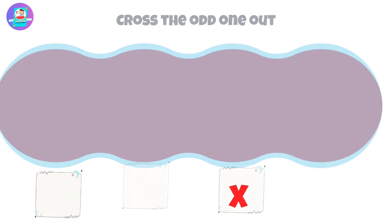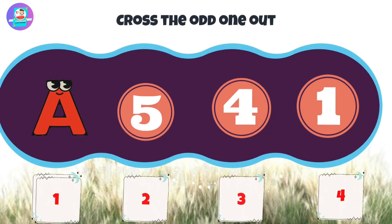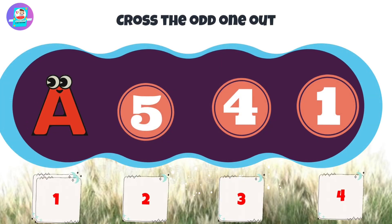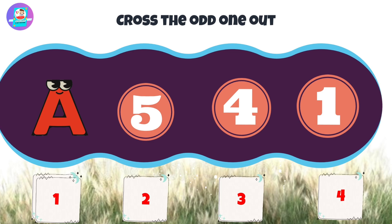Okay, next, there are 4 pictures: 1, 2, 3, 4. Put the odd one out.